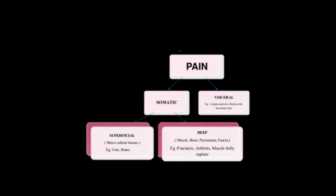Pain can either be visceral pain, which is mainly due to angina, renal colic, or even intestinal colic. Or it may be somatic pain, which is further classified into superficial pain from skin and subcutaneous tissues, or deep pain from muscle, bone, periosteum, and fascia.